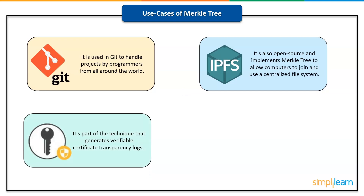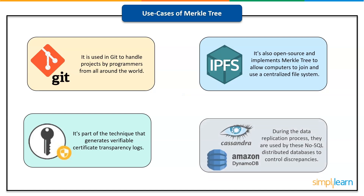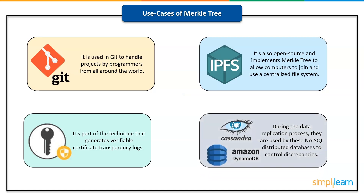Merkle trees are also used to benefit certificate authorities. They are part of the technique that generates verifiable certificate transparency logs. The final use case we look at is database systems like Amazon DynamoDB and Apache Cassandra. During the data replication process, Merkle trees are used by these NoSQL distributed databases to control discrepancies.